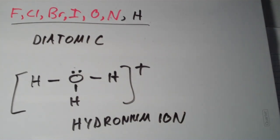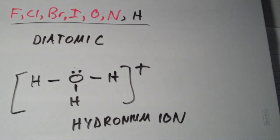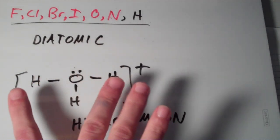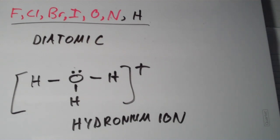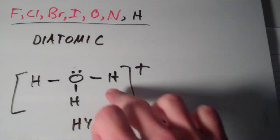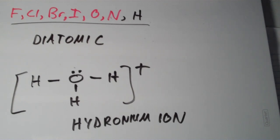Lewis theory is useful not only because it shows which molecules are stable and which aren't, but also because it shows that these molecules combine in discrete entities called molecules. In contrast to ionic bonding, where you have non-directional ionic bonds that form lattices, a covalent bond between two atoms anchors two specific atoms together — it's highly directional. That is why the fundamental unit of molecules and polyatomic ions is just the molecule. In the coming videos, I'm going to show you how to draw Lewis structures for all kinds of different compounds and polyatomic ions.